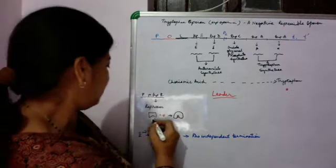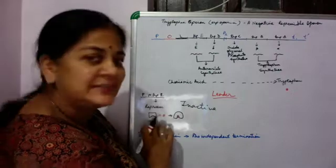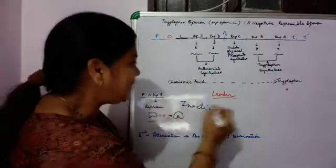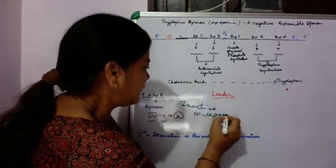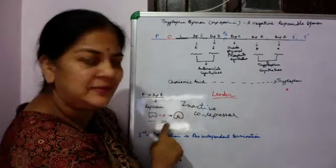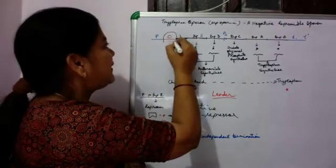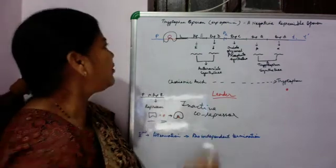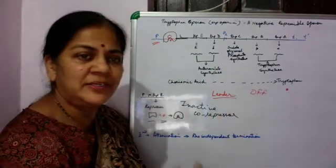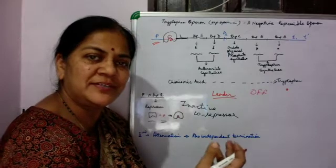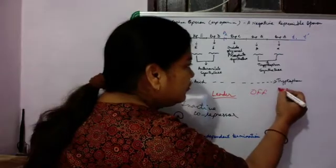Normally the repressor that is formed is in an inactive form and cannot bind to the operator region on its own. Tryptophan acts as a corepressor. The repressor plus the corepressor changes the conformation of the repressor, allowing it to bind to the operator site. Once it is bound, RNA polymerase cannot bind, so transcription is off. This regulation depends upon the level of tryptophan in the cell.